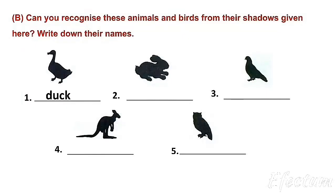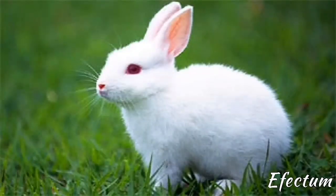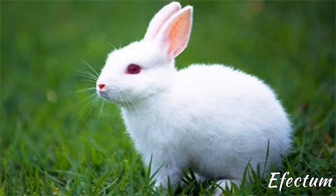Number 2. Which animal shadow is this? Find the answer with the help of the clue box. The answer is rabbit. A rabbit is a small animal. It has two long ears. Rabbits can jump very far with their legs. Rabbits eat grass, leaves and vegetables.